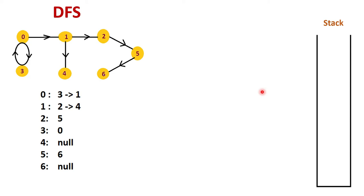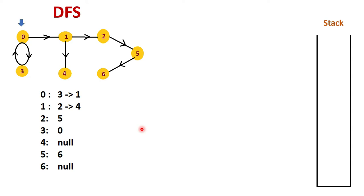Suppose this is the graph I have taken for my example, and this is the adjacency list representation of the same graph. Zero has adjacent nodes three and one as a linked list. One has two and four. Two has five as the adjacent node. Three has no adjacent node — zero is the adjacent node for three. Four has no adjacent node, that is null. Five has adjacent node six, and six's adjacent node is null.